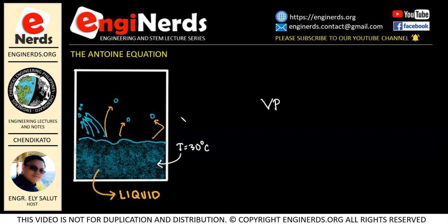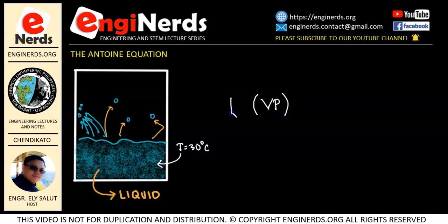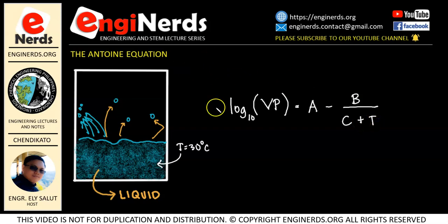And in solving problems in chemistry, thermodynamics, chemical engineering calculations, and separation processes, we will often need to determine the vapor pressure in our system. And to do that, one of the methods that is frequently used is the Antoine equation. In the Antoine equation, we can get the vapor pressure by using this equation. The log base 10 of the vapor pressure is equal to A minus B over C plus T. This is what we call the Antoine equation.